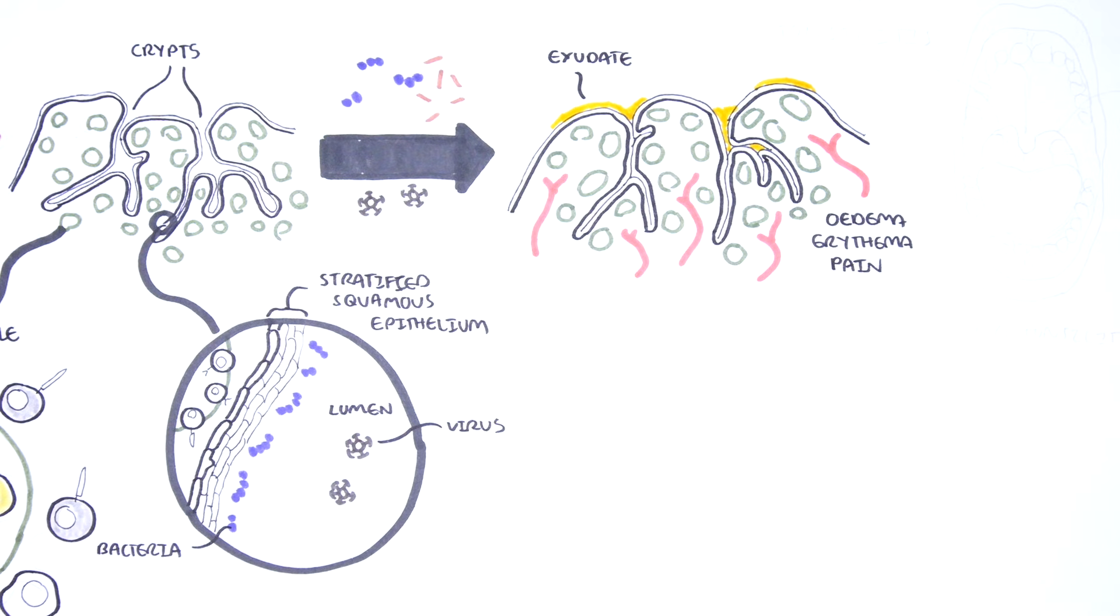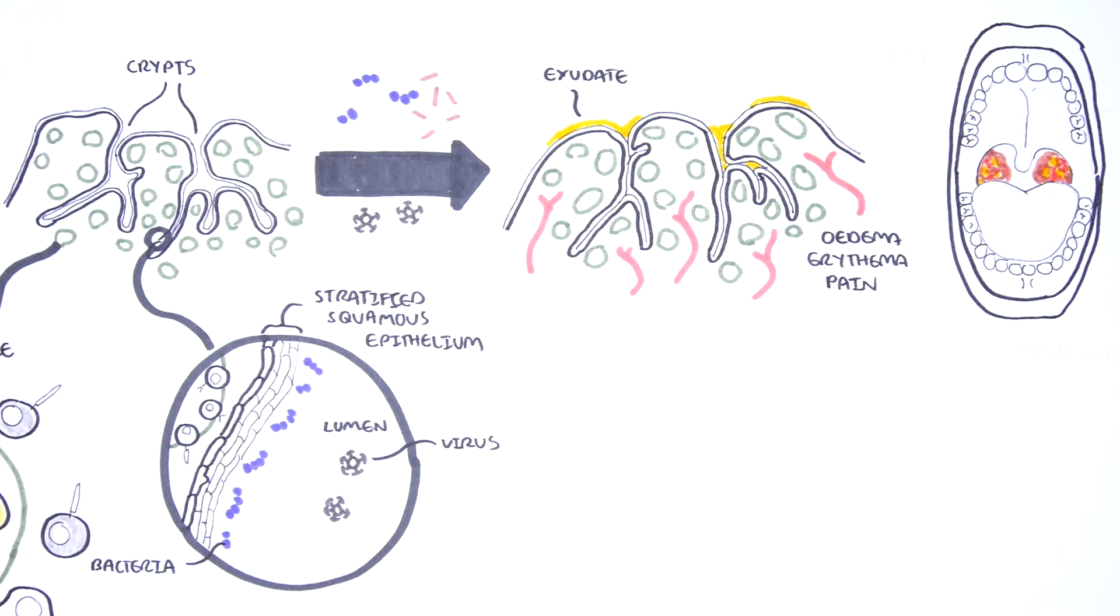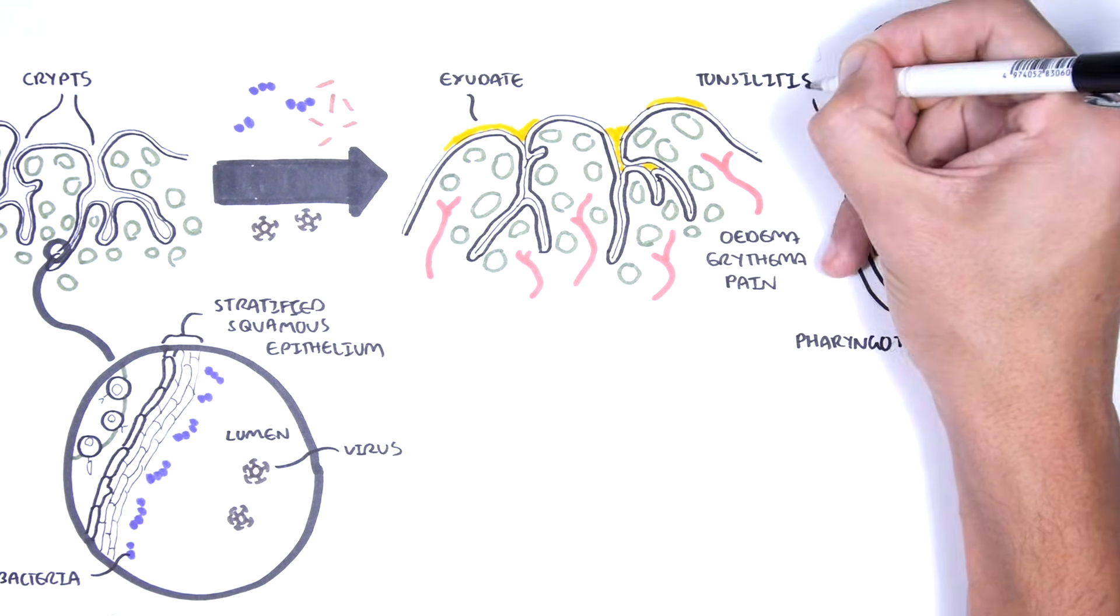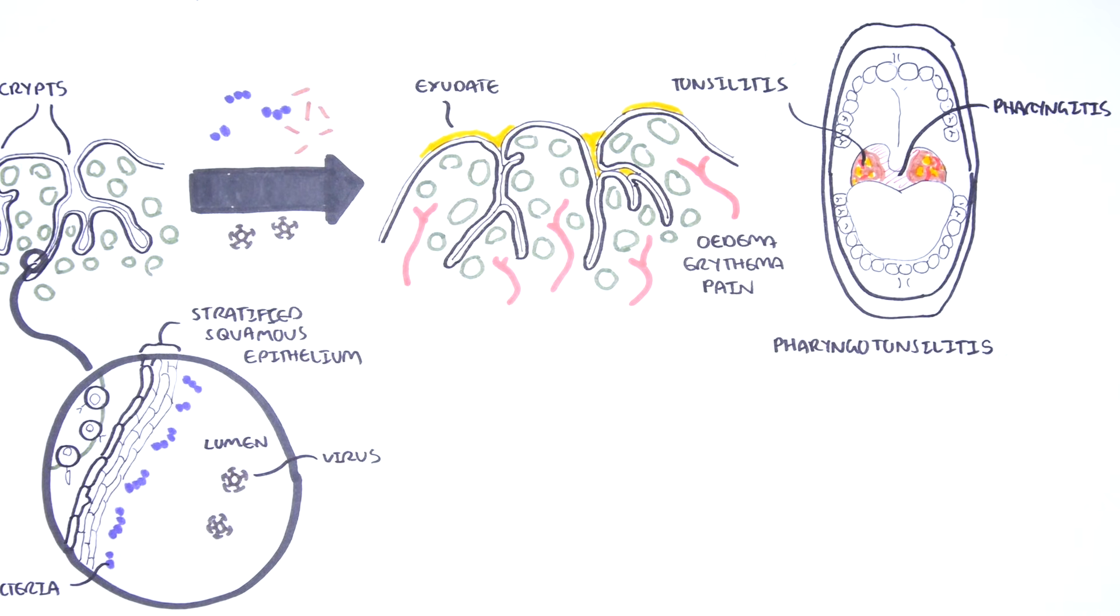Cultures are not often useful in distinguishing the offending pathogens because even if you grow something they are probably commensal organisms anyway. They live there naturally. Generally with acute tonsillitis the pharynx is also inflamed which is the back of your throat and so a better definition is pharyngotonsillitis rather than acute tonsillitis. In this video we will use both terminologies.